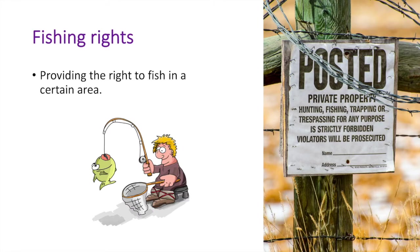Fishing rights allow the right to fish in a certain area or for a certain time. These rights are selectively given to prevent overfishing. If no rights are established, there is a possibility for the area to be overfished. Once clear rights are established, there is a restriction on the amount of fishing that can take place. This helps to preserve the fish population and prevent the exploitation of the resource.